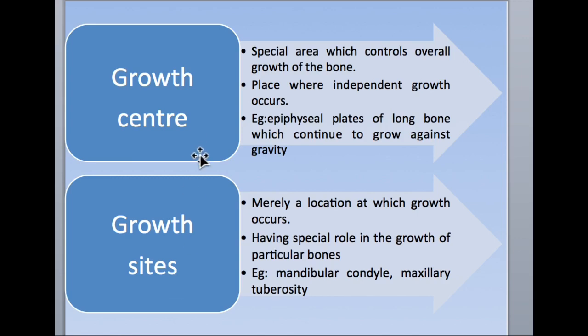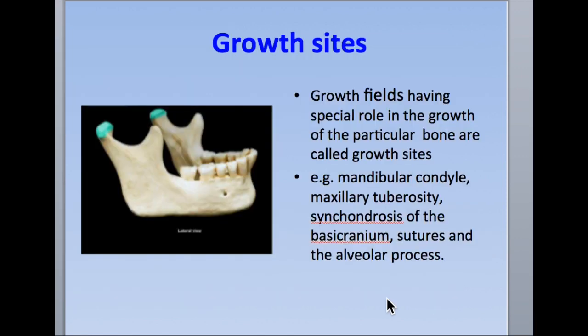Examples of the growth center include the epiphyseal plates of long bones and the synchondrosis of the bones. For growth sites, the mandibular condyle and maxillary tuberosity are responsible for bone growth — either resorption or deposition takes place and they move the bone in one direction. The condyle is a growth site showing the condylar position of the mandible. It is also present in the growth field and may be part of a growth center, but it cannot be the growth center itself, whereas the growth center can also be a growth site.